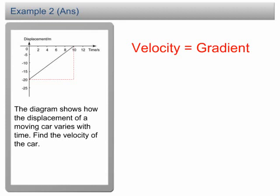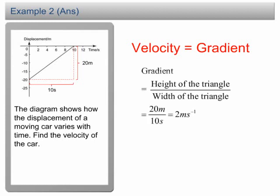The gradient of the graph is equal to the height over the width of the triangle. The height of the triangle is 20 meters, whereas the width is 10 seconds. Therefore, the gradient is 20 meters over 10 seconds, equal to 2 meters per second.